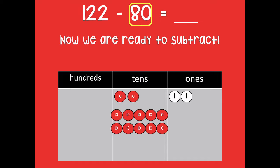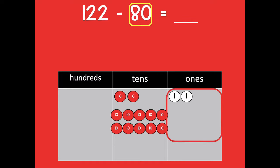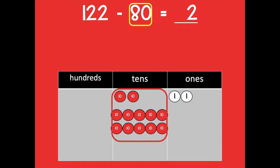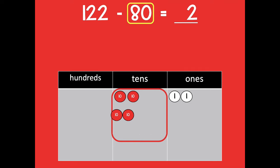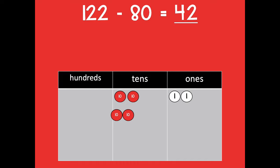Now we're ready to subtract. We did all our decomposing first. In the ones place, I have two ones and take away zero ones — that's just two. In the tens place, I subtract eight tens, and I'm left with four tens. There are no hundreds to subtract. So 122 minus 80 equals 42.